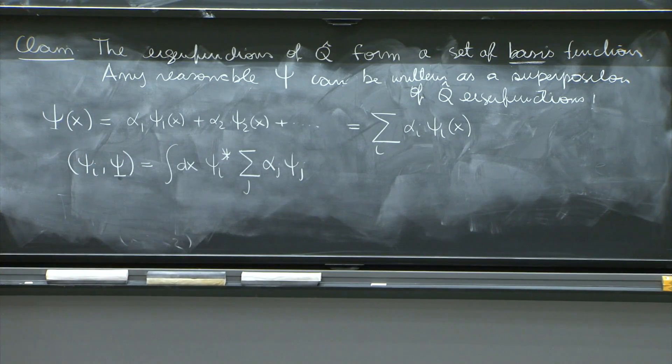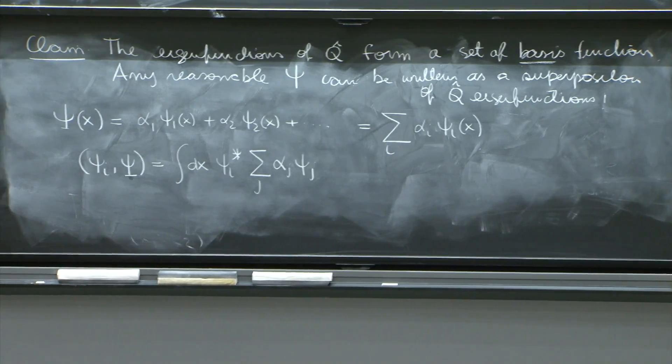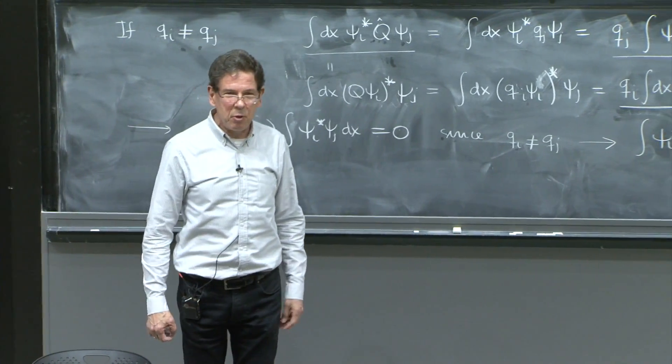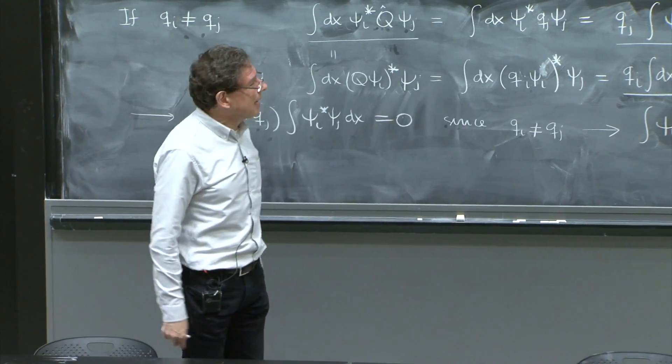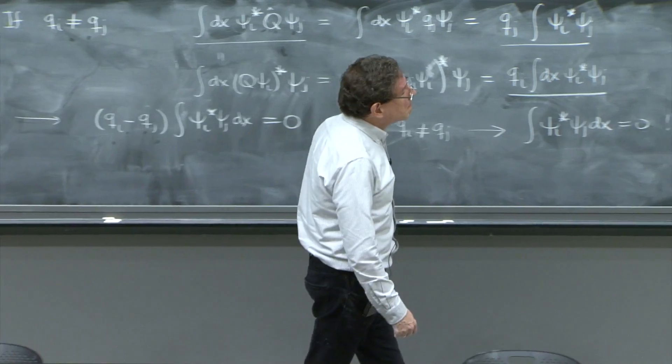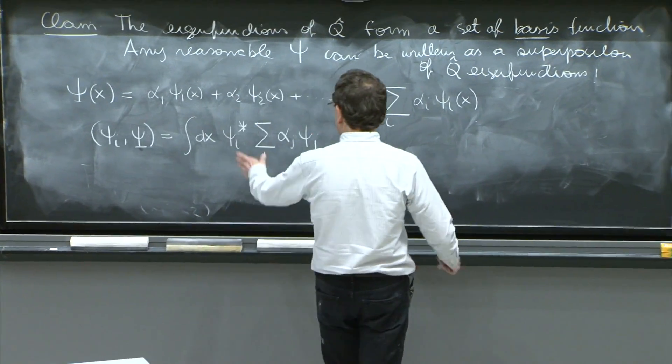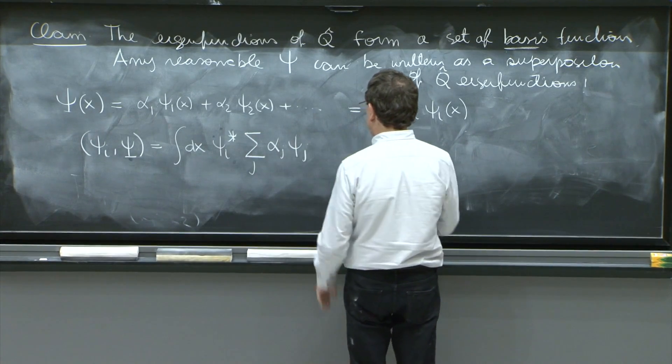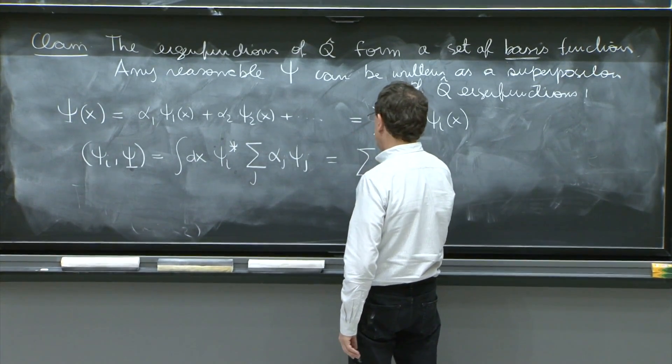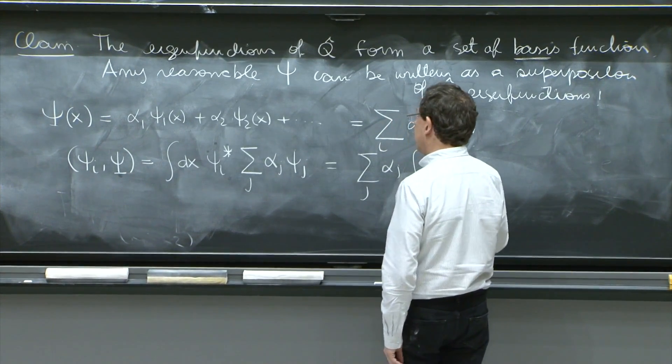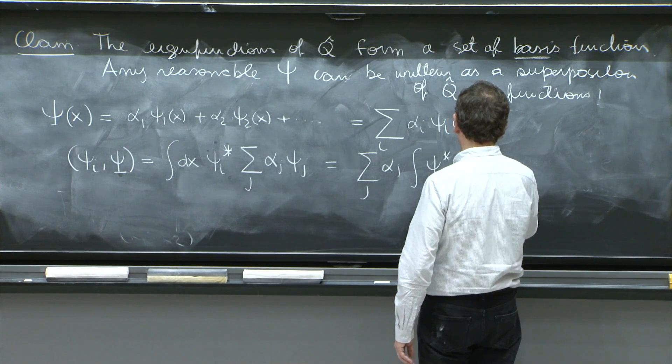And psi is the sum over j of alpha j psi j. You can use any letter. I used i for the sum, but since I put a psi i, I would make a great confusion if I used another i. So I should use a j there. And what is this? Well, you're integrating the sum, so the sum can go out. It's the sum over j, alpha j, integral of psi i star psi j dx.